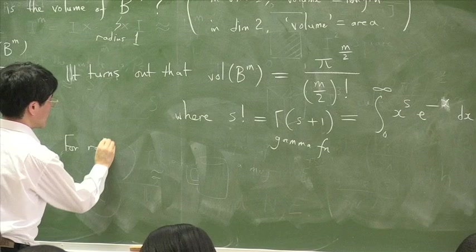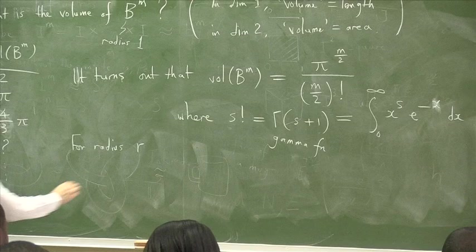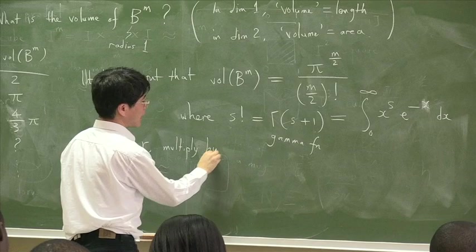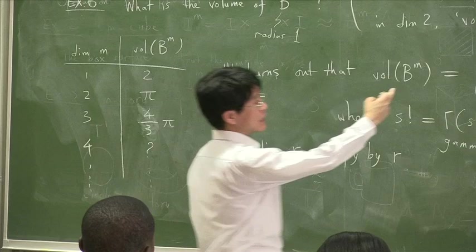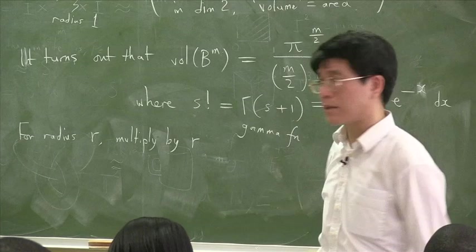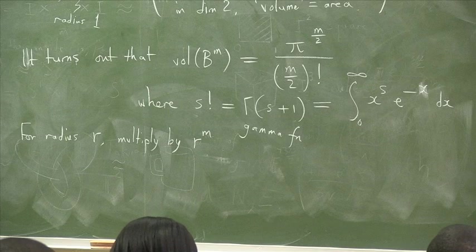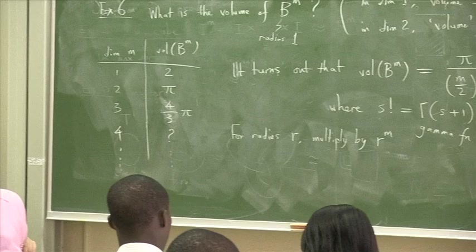So for radius r, recall that we are talking about unit radius, but for radius r, just multiply by what factor in dimension m? If you make this ball have radius r rather than radius one, we have to multiply this answer by r to the m. That's right. Because that's what the volume is. So, for example, in the three-dimensional space, you have to multiply it by r cubed.